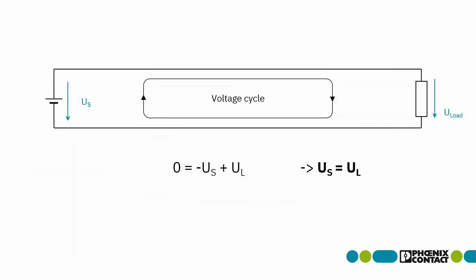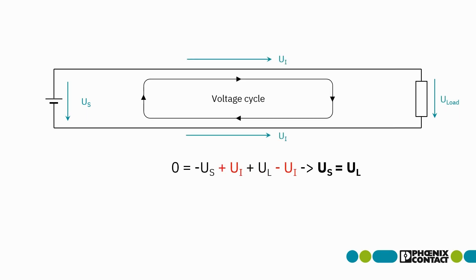Back to the standard case. Here still without interference — a voltage cycle naturally shows that the source voltage is equal to the onload voltage. Now with influencing: the voltage circulation provides an important insight. The influencing voltages of the supply and return lines cancel each other out, and the onload voltage remains unchanged.